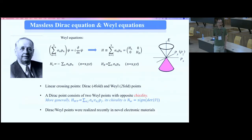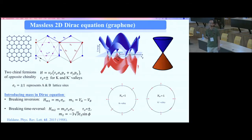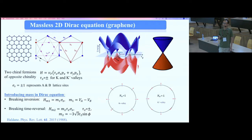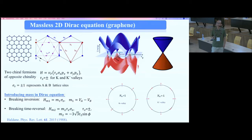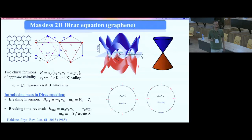In recent years, Dirac and Weyl points have been realized in condensed matter systems. In 2D we usually call everything with a linear crossing a Dirac point. In graphene, using the tight-binding model, at the K and K-prime points you have two linear crossings. Writing the effective Hamiltonian with tau-z representing K and K-prime and sigma-z representing the A and B sublattices, you can visualize the pseudospin rotating with opposite winding numbers at K versus K-prime.